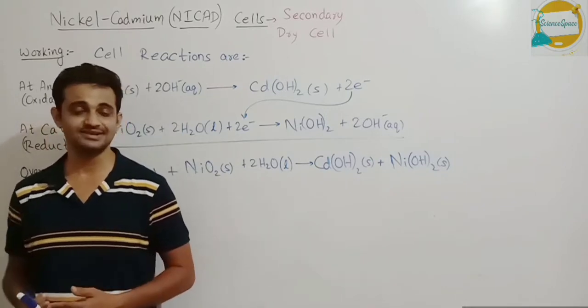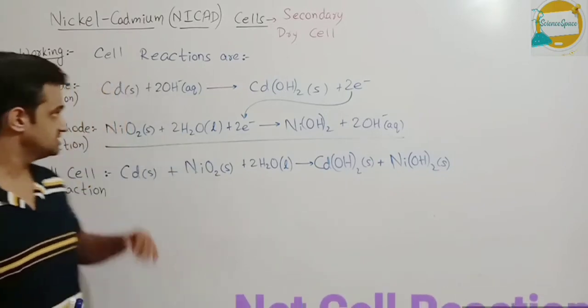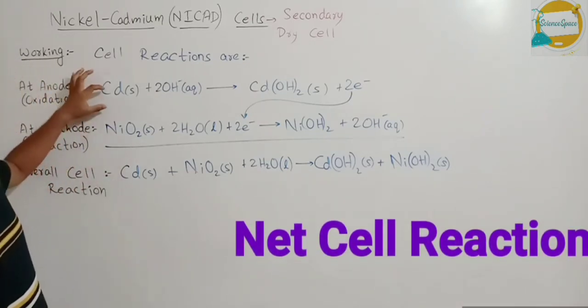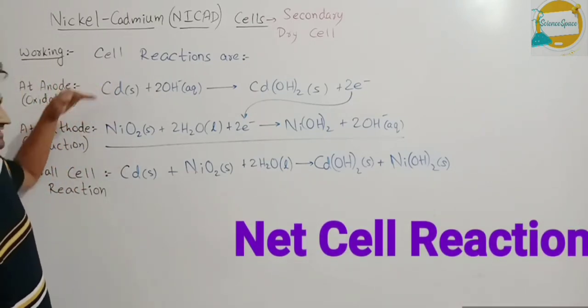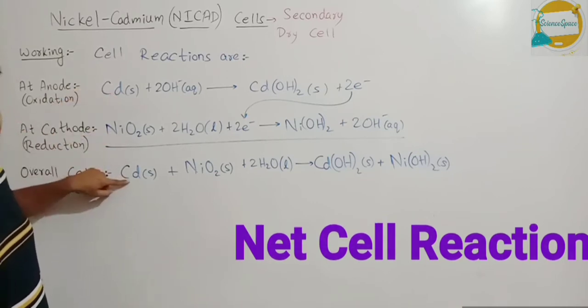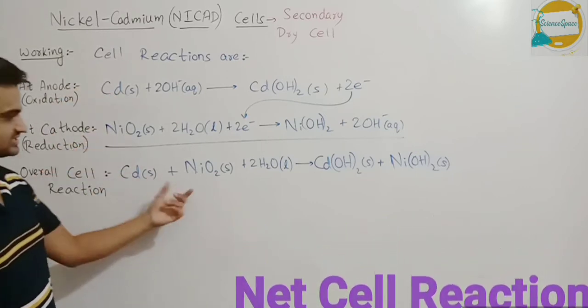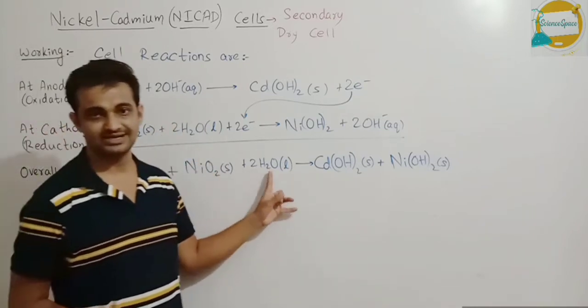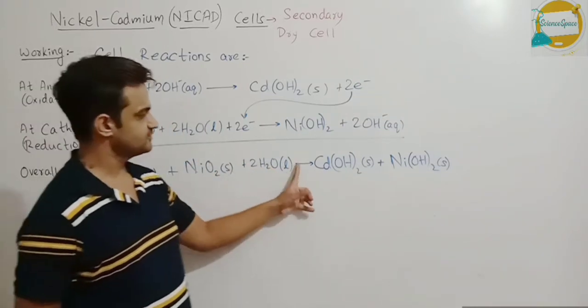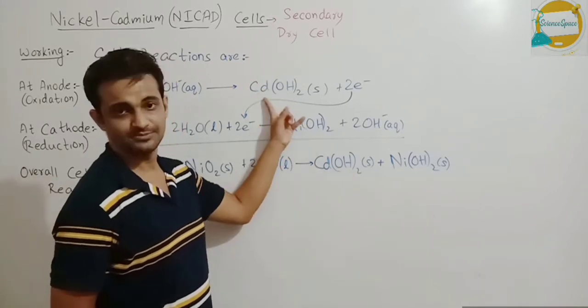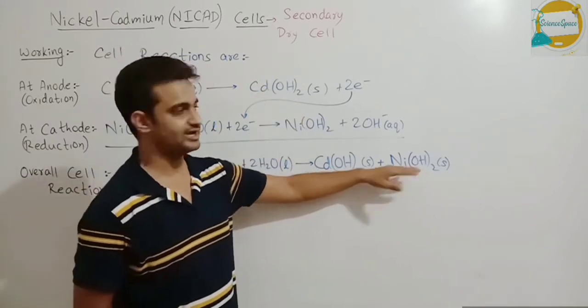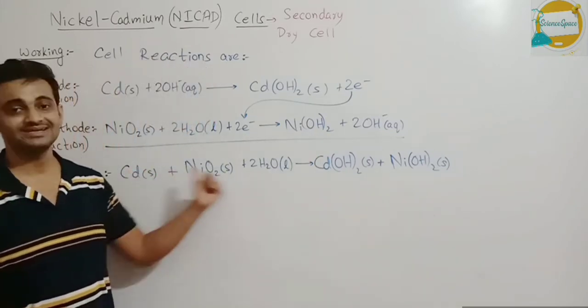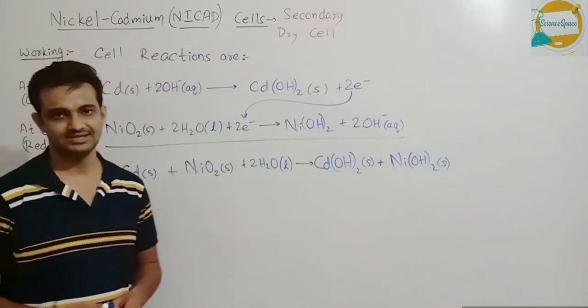So the net cell reaction combining these two reactions at anode and cathode will be obtained as we will add left hand side to right hand side. So we will get Cd in solid form plus nickel oxide in solid form combined with water that is 2H2O will give Cd(OH)2 that is cadmium hydroxide and nickel hydroxide from this second reaction. So this will give the combined cell reaction of this electrochemical cell.